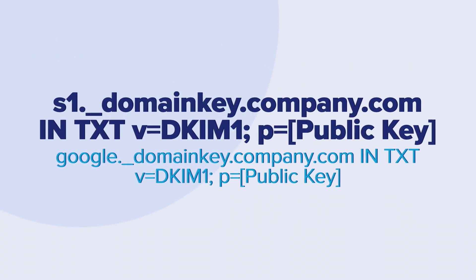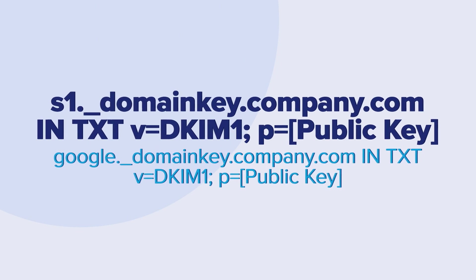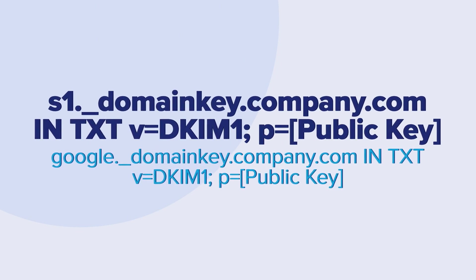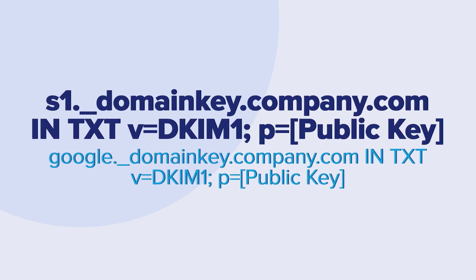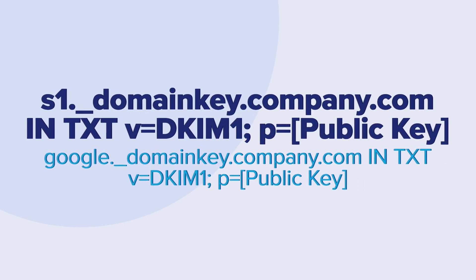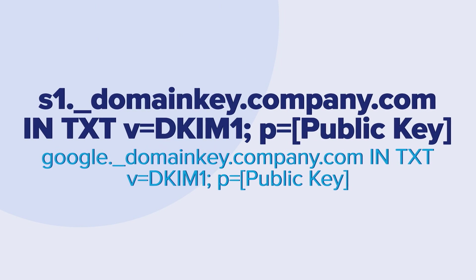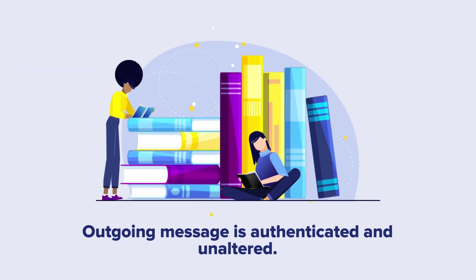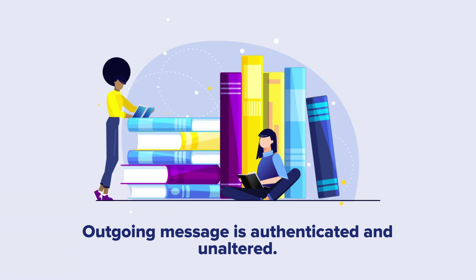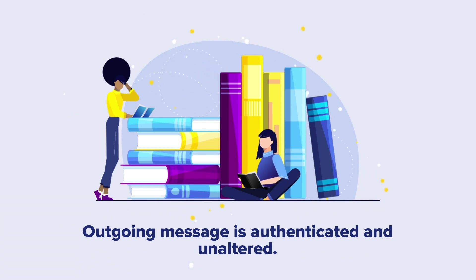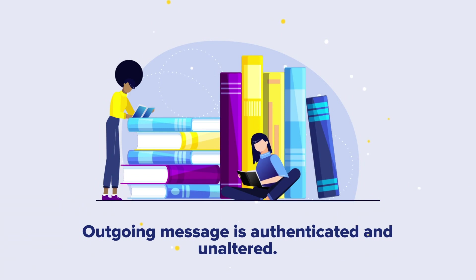In this example, S1 is the selector for SendGrid and Google is the selector for Google Workspace. This way, the receiving server uses the selector to locate and retrieve the public key to verify that the specified outgoing message is authenticated and not altered along the way.